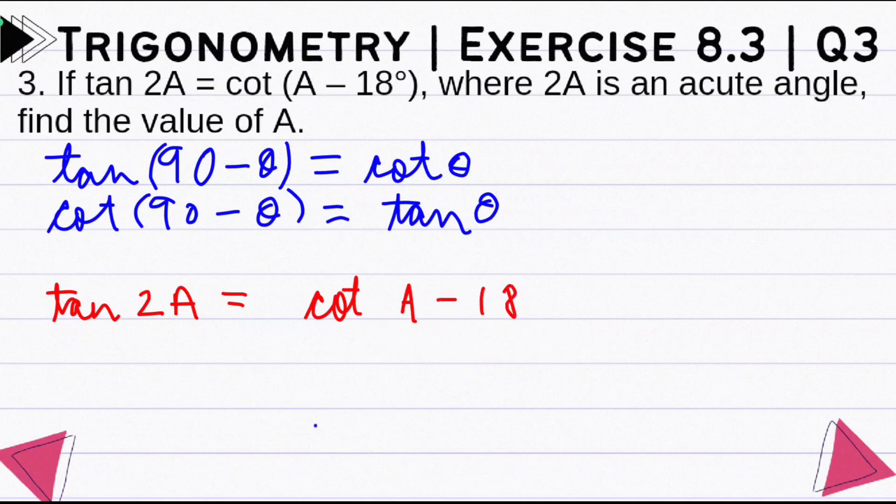Now we will change the left-hand side, convert it into this form. So here we have written tan 2A. If we compare it with tan theta, then theta is 2A. So you can write tan 2A in cot form as cot(90° minus 2A), right?